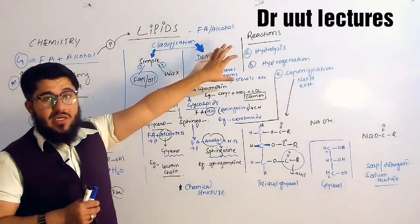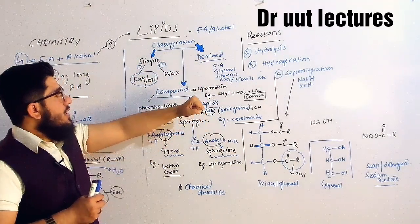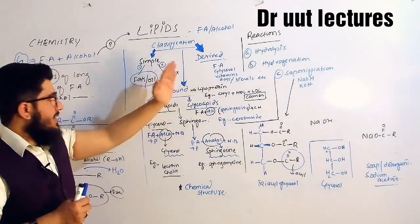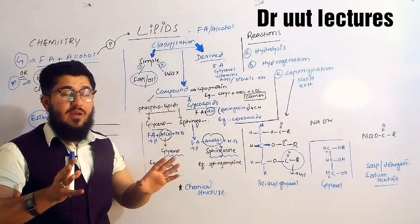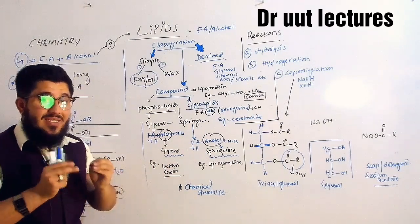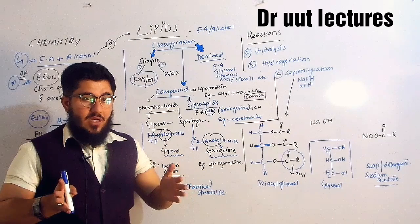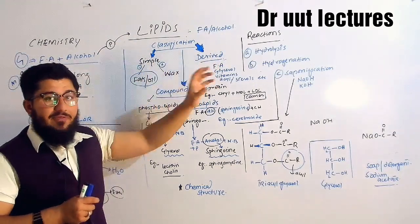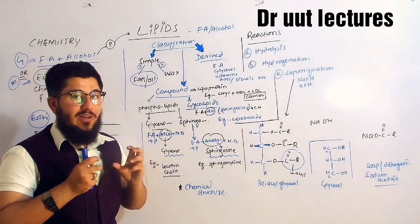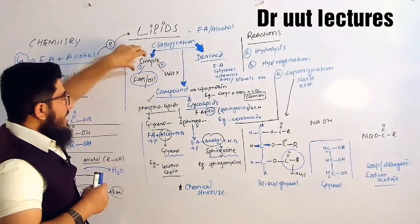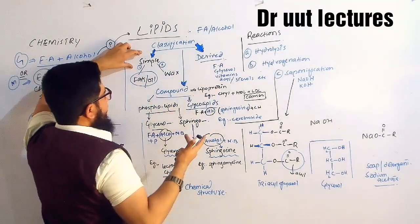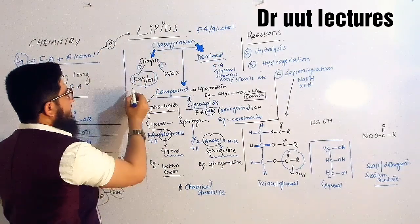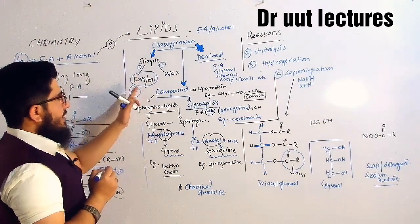Let's move towards the classification. Lipids are classified into three major groups: simple, compound, and derived. One thing to keep in mind is that lipids are made up of fatty acid and alcohol, so all groups — simple, compound, derived — all have fatty acid and alcohol in them. What makes them different is the type of alcohol. Due to different types of alcohol, we have three groups of lipids. In simple lipids, we have fatty acid and glycerol as the alcohol.